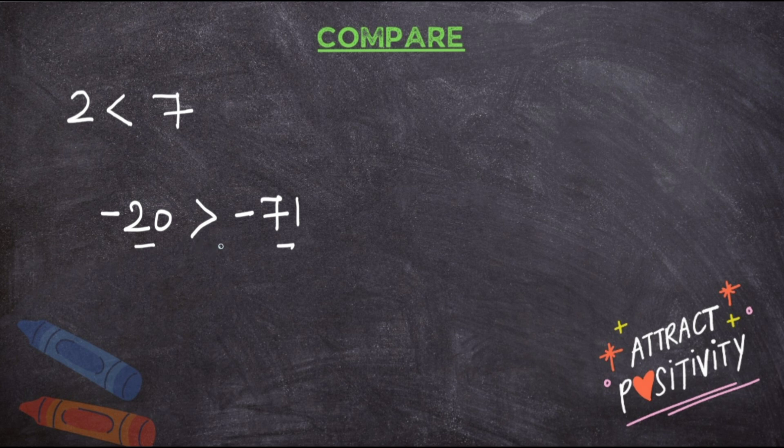I know it's a bit confusing, but relax. I'll take one more. Minus 16, minus 88. What do you observe? Both are negative, correct? Now check the numbers 16 and 88. So 88 is big, but since it is having minus sign in front of it, that means it is going to be a small number. And minus 16 is going to be a big number. So you are going to put this sign.